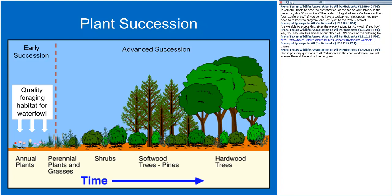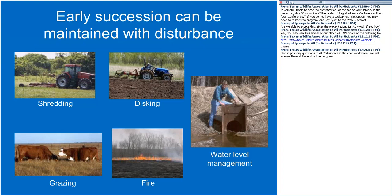This early successional stage can be maintained with disturbance. Activities such as shredding, disking, grazing, fire, and water level management are all ways to manipulate a habitat and disturb it to maintain a productive site for annual plants. I want to go over each of these and provide some pros and cons of each management technique.